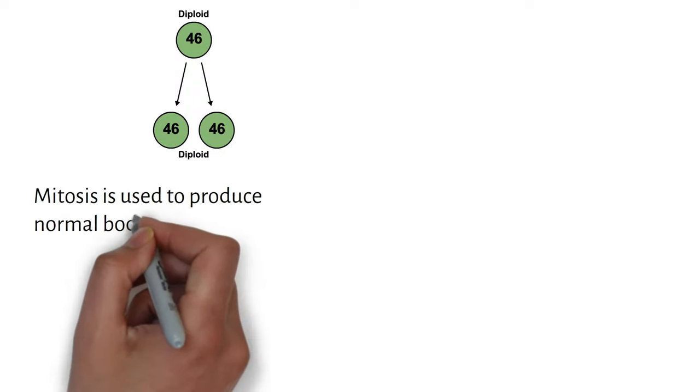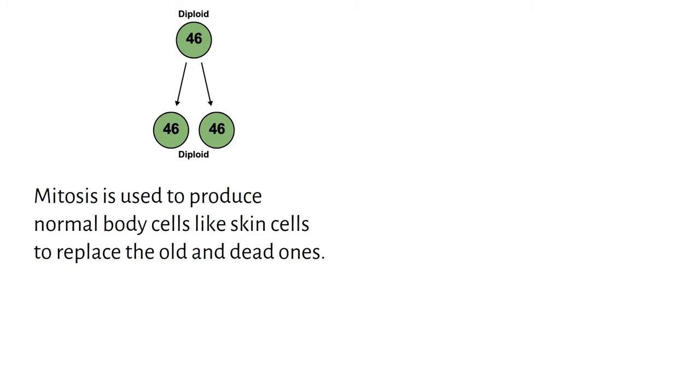In meiotic cell division, a diploid cell with 46 chromosomes makes four cells with half the number of chromosomes each. That is 23 chromosomes each.